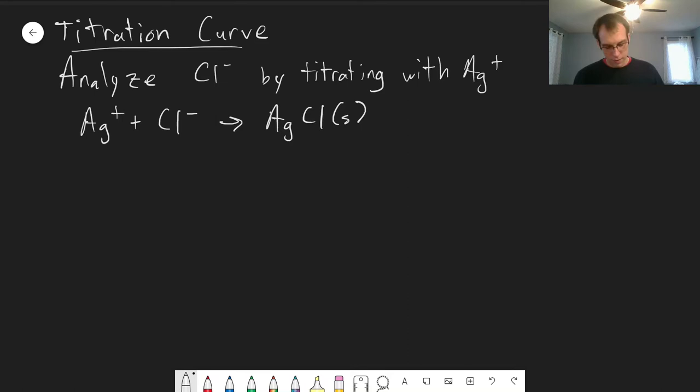And we choose this reaction because it is both fast and has a very large K value. If we want K for this reaction, it's the inverse of Ksp, which for silver chloride is 1.8 times 10 to the minus 10.